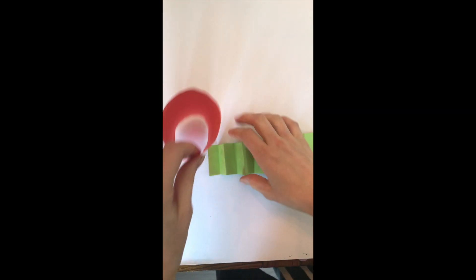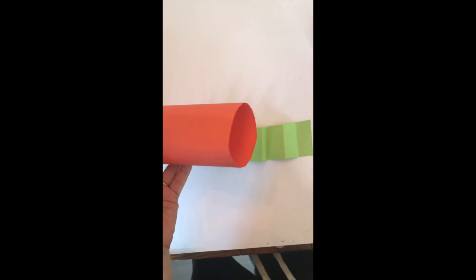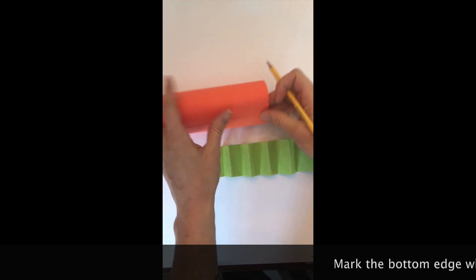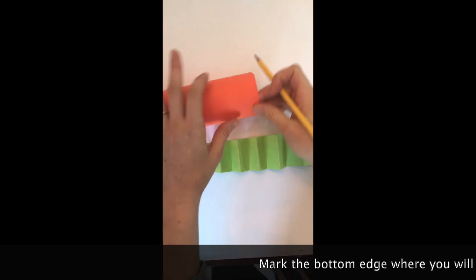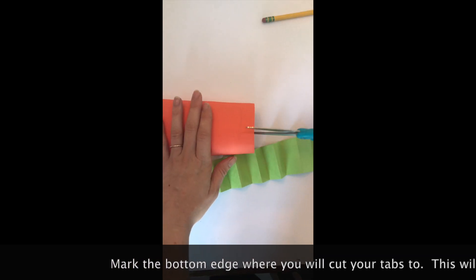Now I need to attach it to my paper somehow. To do that I need to cut tabs or feet for it to stand. I'm making a mark with my pencil all the way around because I want the feet or the tabs to be the same size or cut the same distance up.